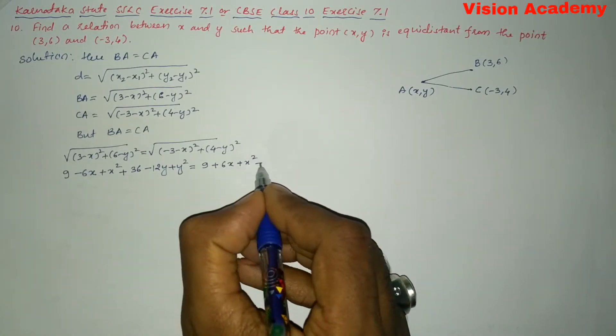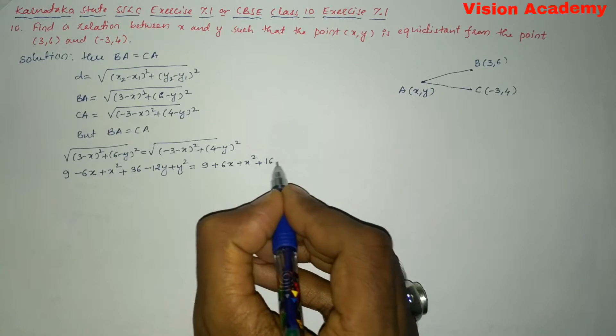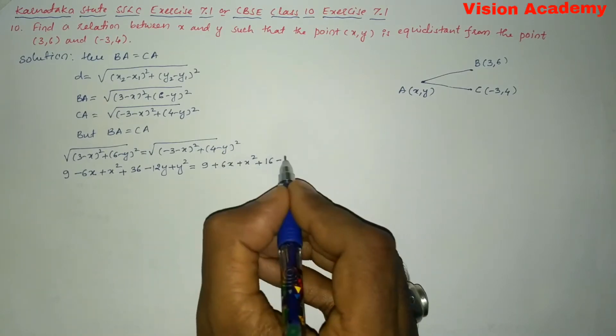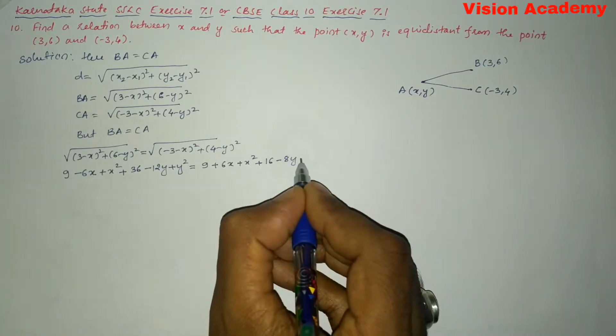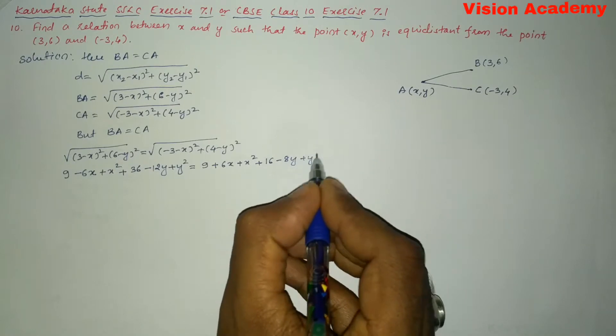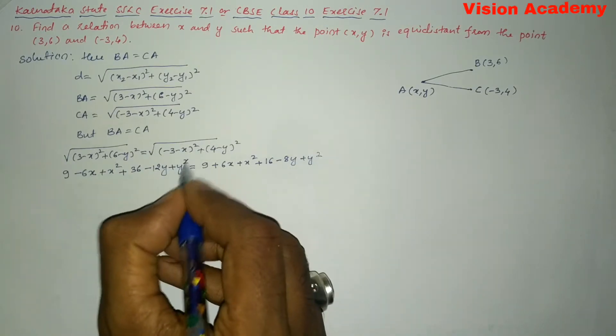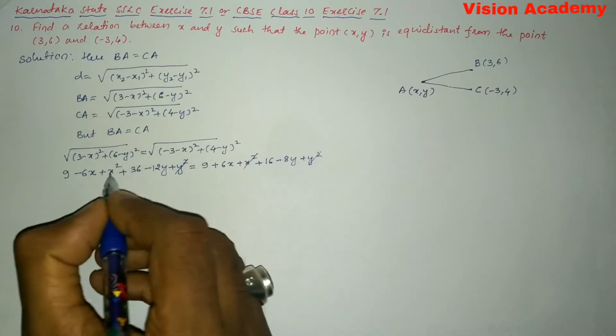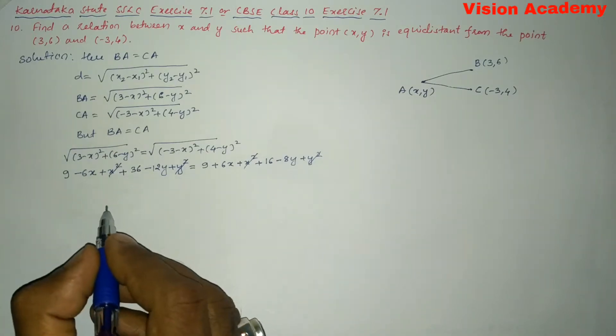Similarly, here we will write 4 times 4 is 16, minus 4 times 2 is 8Y, and then plus Y². So, here this Y² and this Y², this X² and this X² will get cancelled.